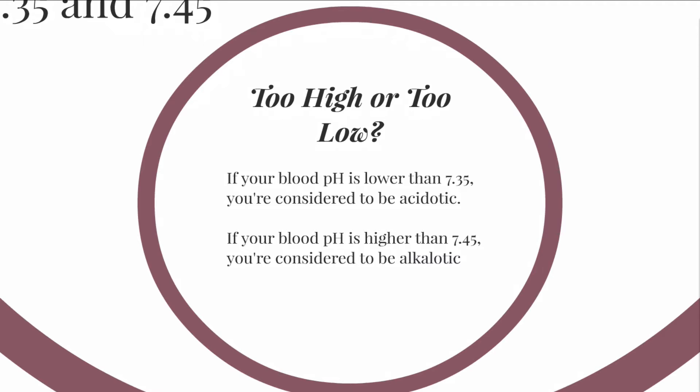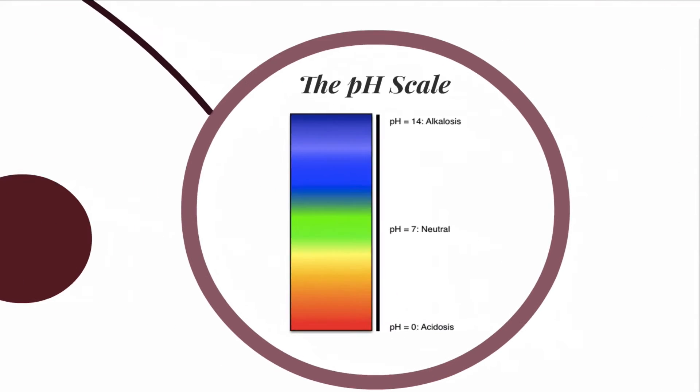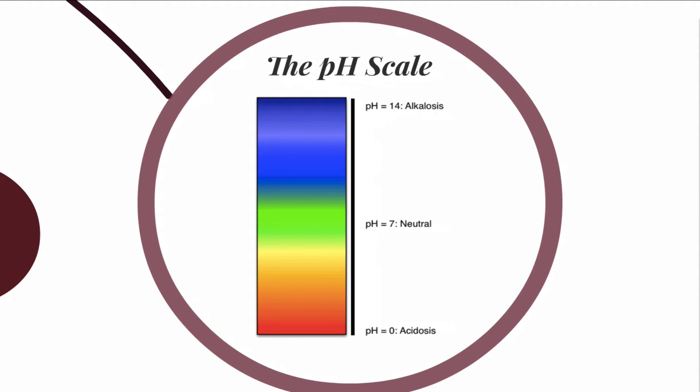So if our pH is too high or too low, we have some issues. If it's below 7.35, we consider that to be acidotic. If the blood pH is higher than 7.45, we consider that to be alkalotic. So let's take a look at that in graph format. This is the pH scale — it goes from zero at the bottom to 14 at the top, with 7 being in the middle and considered neutral. Below 7, you're getting into that acidotic environment, and above 7, you're getting into that alkalotic environment.